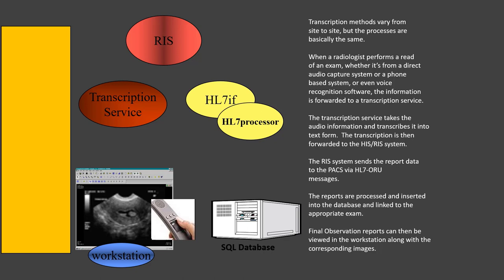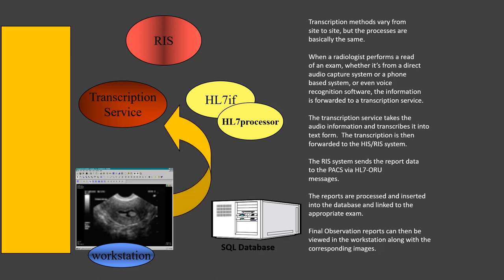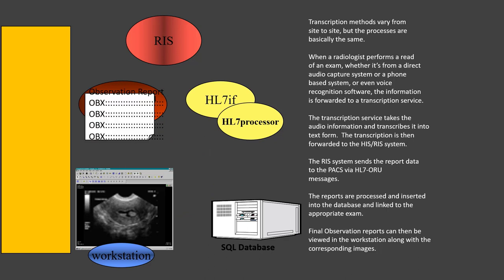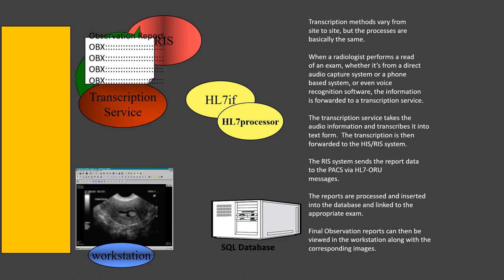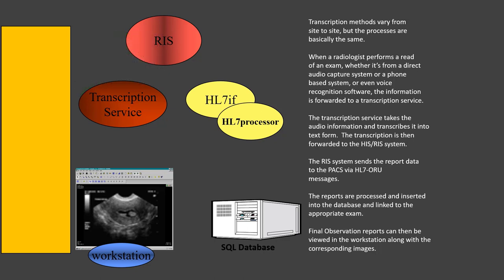Now let's talk about transcription. Transcription methods vary from site to site, but the processes are basically the same. When a radiologist performs a read of an exam — whether from a direct audio capture system, a phone-based system, or voice recognition software — the information is forwarded to a transcription service. The transcription service takes the audio information and transcribes it into text form. The transcription is then forwarded to the hospital and RIS information systems. The RIS system sends the report data to the PACS via the HL7 ORU messages, and the reports are processed, inserted into the database, and linked to the appropriate exam. Final observation reports can then be viewed in the workstation along with the corresponding images.